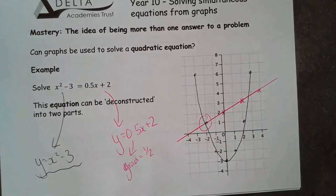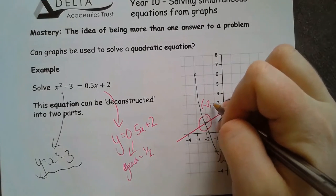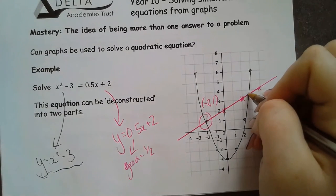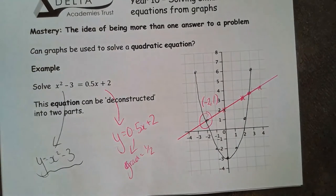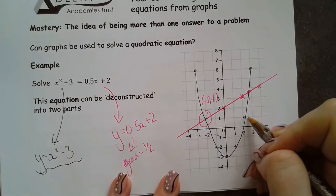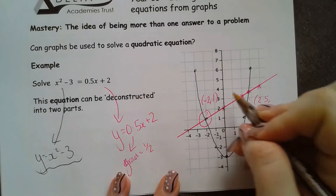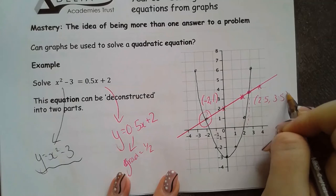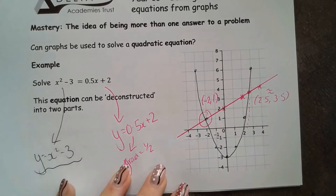There is one route I can see here very clearly. That's the point minus 2, 1. This point is less clear. This is only going to be an estimate of a solution. I'm going to read that one down to find my coordinate. It's about 2.5 and it goes across to about 3.5, roughly. This is not accurate. It is an estimate.